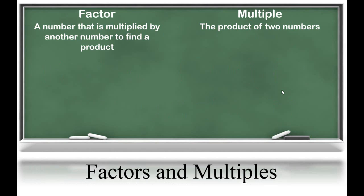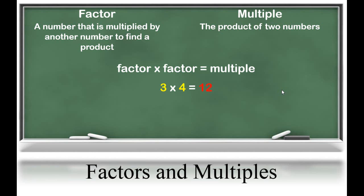In this unit, students will use their knowledge of multiplication and division to build an understanding of factors and multiples. It's important for students to see how factors and multiples are related. A factor is a number that is multiplied by another number to find a product. A multiple is a product of two numbers. A factor times a factor is a multiple. So 3 and 4 are both factors of 12, and 12 is a multiple of 3 and a multiple of 4.